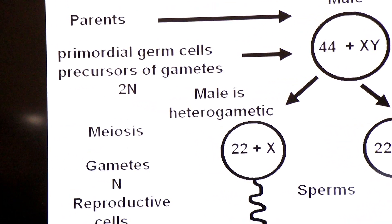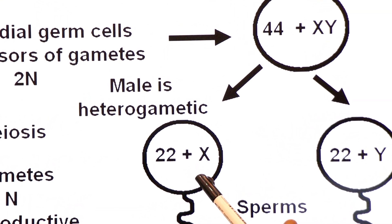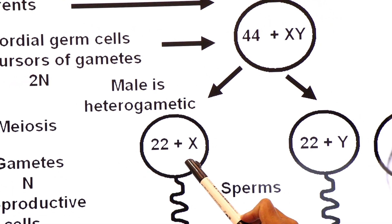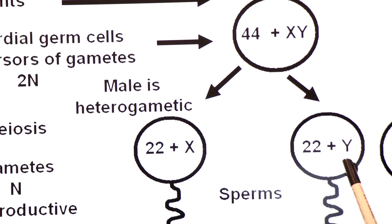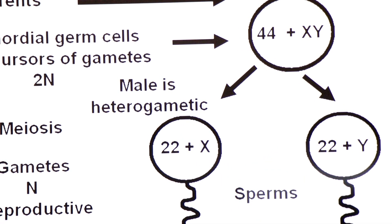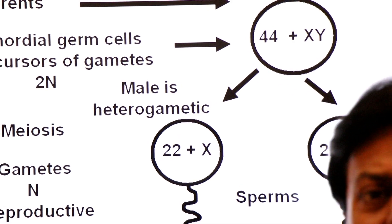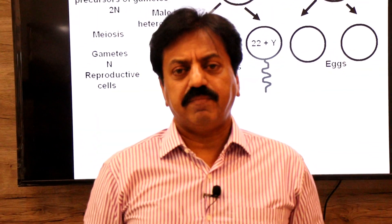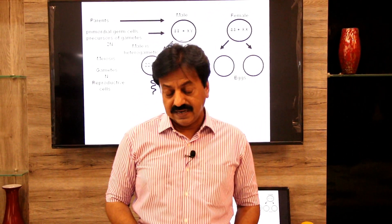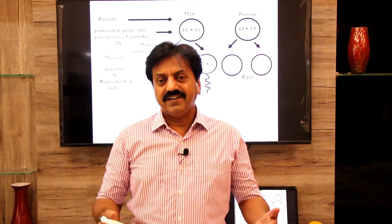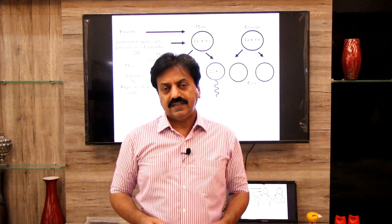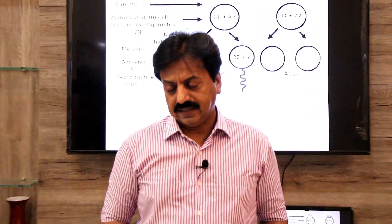The male has two types of gametes or sperm produced — one with X and the other with Y. That is why the male is heterogametic. Hetero means different, gamos means gametes — an organism that produces two types of gametes is called heterogametic.